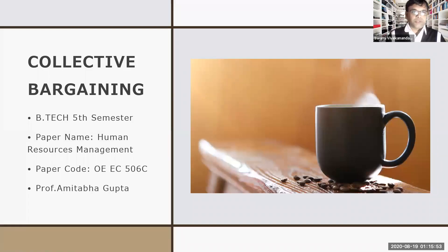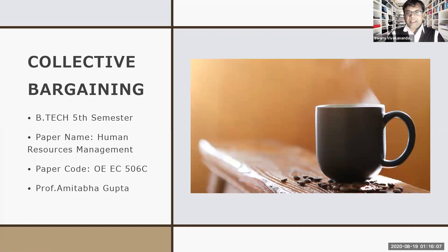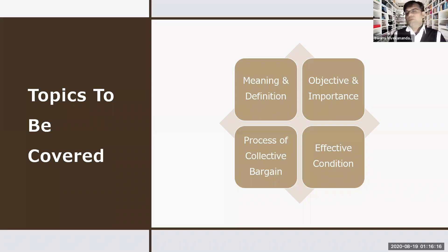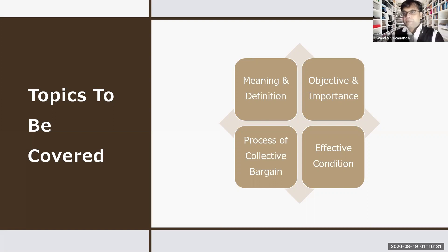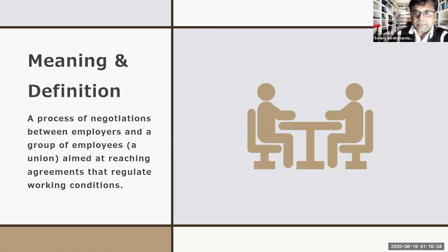Good morning everyone. Today we are back with the B.Tech fifth semester paper: Human Resource Management, paper code OEC506C. We are going to discuss collective bargaining, which is part of Chapter 4. The topics we will cover are: meaning and definition of collective bargaining, objectives and importance, the process, and effective conditions for conducting collective bargaining.